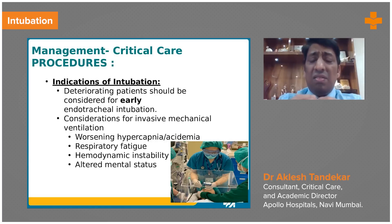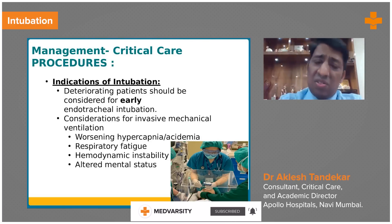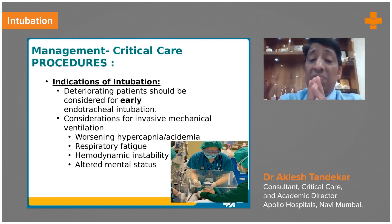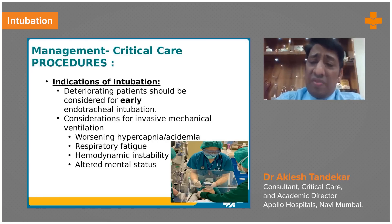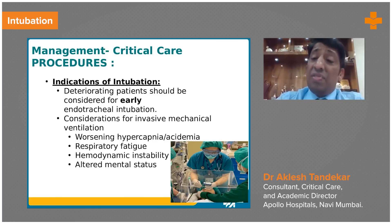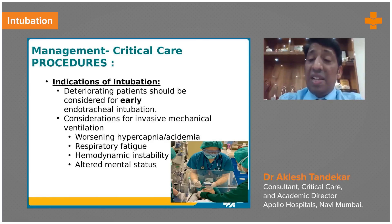First is preparation: patients should receive adequate fluid — at least 500 ml crystalloid — before intubation. All difficult airway gadgets like bougie, different laryngoscope blades, and different sizes of endotracheal tube should be ready. Suction should be readily available, because if the patient vomits or aspirates and you don't have suction, that can complicate intubation. Video laryngoscope is very helpful.